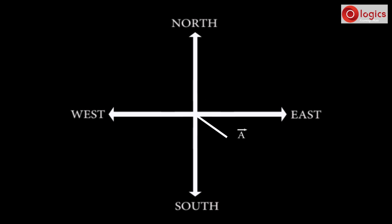Let's draw another vector. Its direction is 335 degrees, which means from east direction, in counter-clockwise rotation, the vector is making a 335-degree angle.